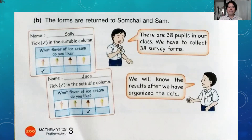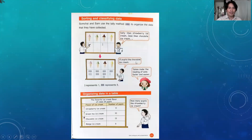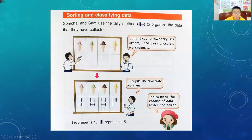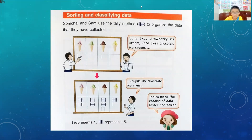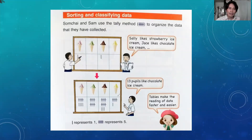Sam replied: we will know the results after we have organized the data. So the second step after collecting data is organizing, or categorizing, the data. How? By making a table. First you can do the tally — you write a box and mark the shape. What is this symbol? It's like when you play badminton.